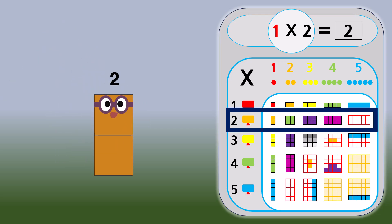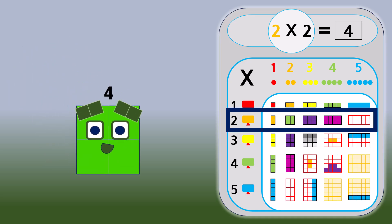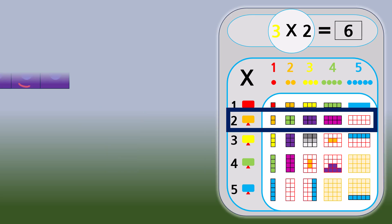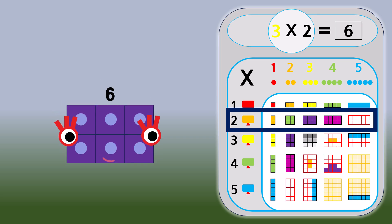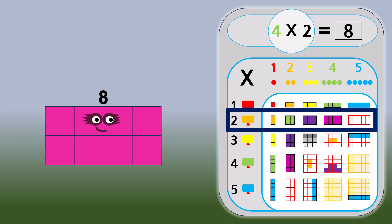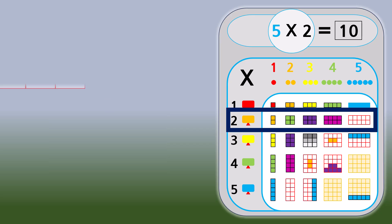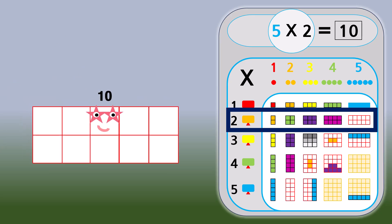Turn it around. 1 times 2 equals 2. 2 times 2 equals 4. 3 times 2 equals 6. 4 times 2 equals 8. 5 times 2 equals 10.